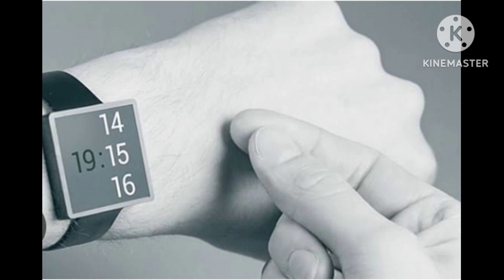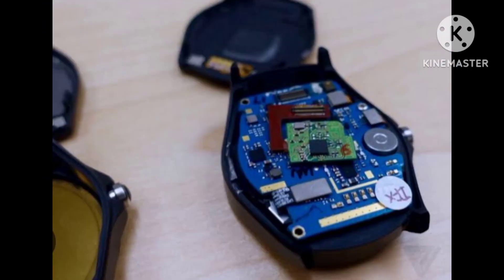The radar chip works by emitting electromagnetic waves that bounce off nearby objects and are then detected by sensors on the chip. The radar can detect sub-millimeter movements in the air and translate them into commands that can be used to control the device.